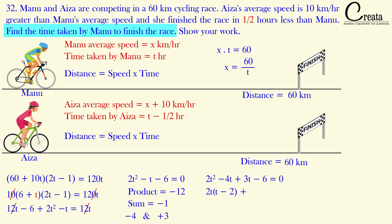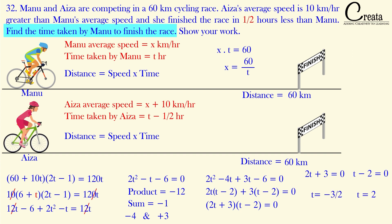Taking common terms: (2t + 3)(t − 2) = 0. This gives 2t + 3 = 0, so t = −3/2, or t − 2 = 0, so t = 2. Since time cannot be negative, we discard t = −3/2. The answer is t equals 2 hours — Manu will take 2 hours to complete the race.